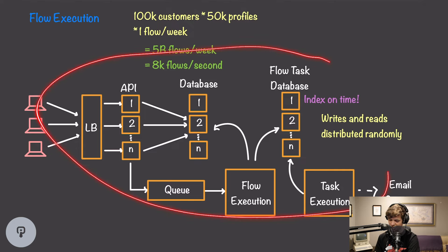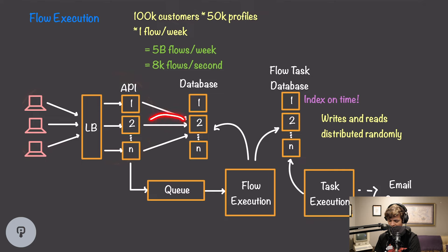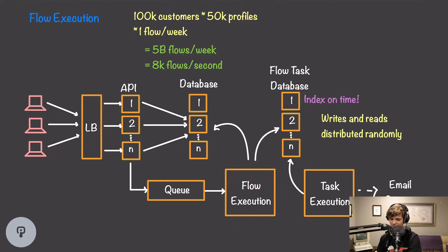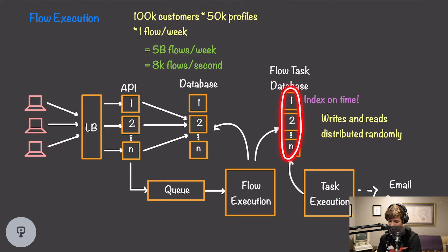Let's take a look at this whole system end-to-end. When our public API receives an event, it logs the event to the database and adds it to a queue. The flow execution service pulls from the queue, finds any flows triggered by that event, and adds all of that flow's tasks to the flow task database — calculating the execution time for each task based on the delays. Each task is added to one of N nodes at random. Meanwhile, the task execution service queries one of these N nodes at random, finds the next task within that node, waits until it's time, and sends the email to the email service.